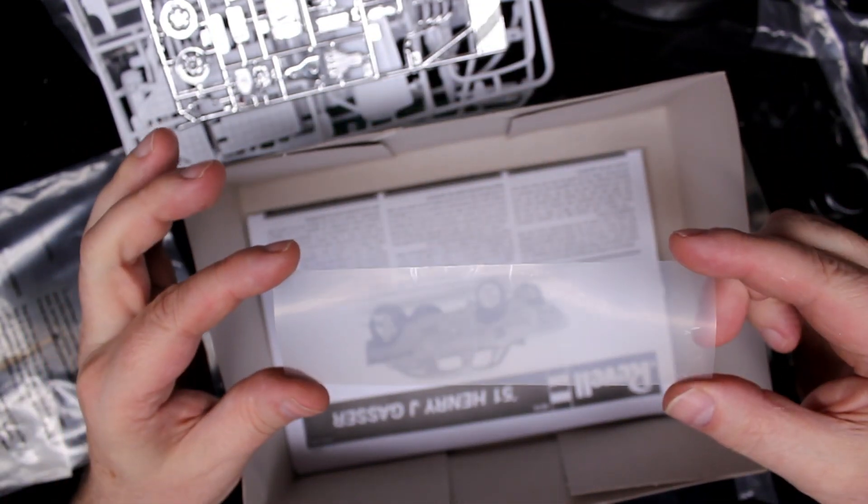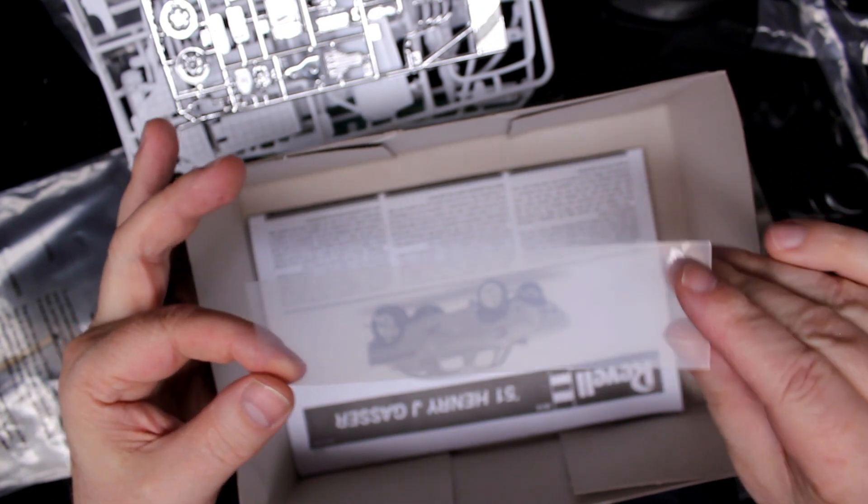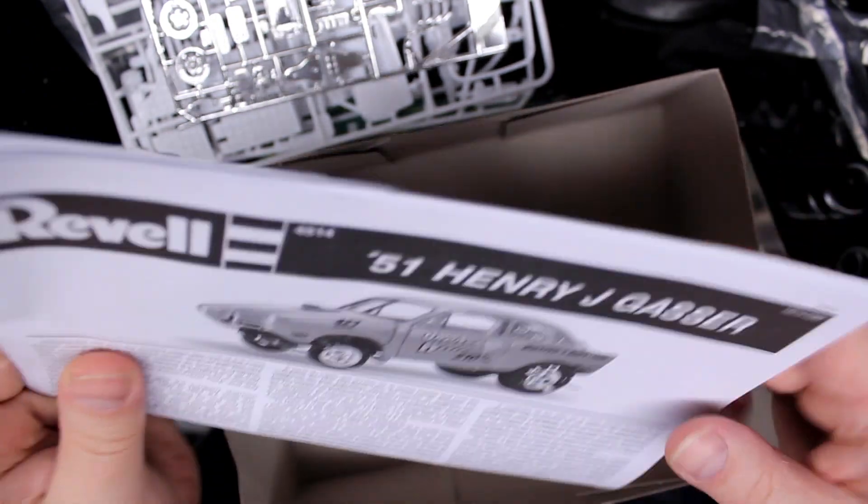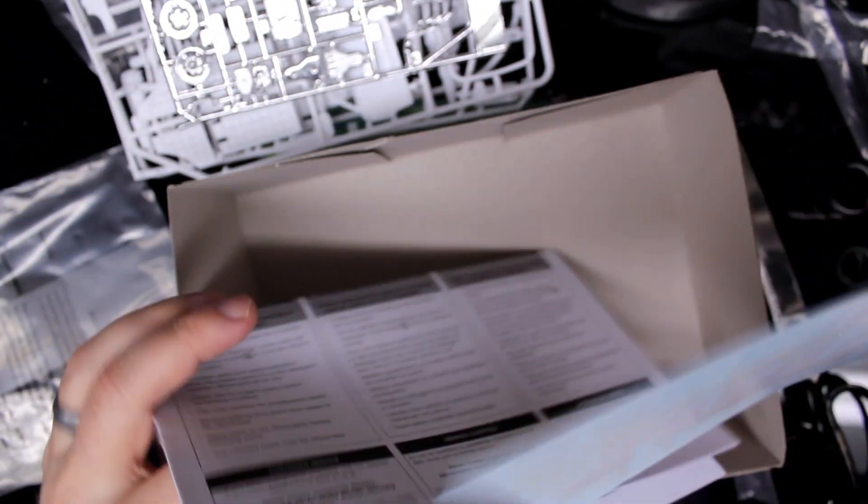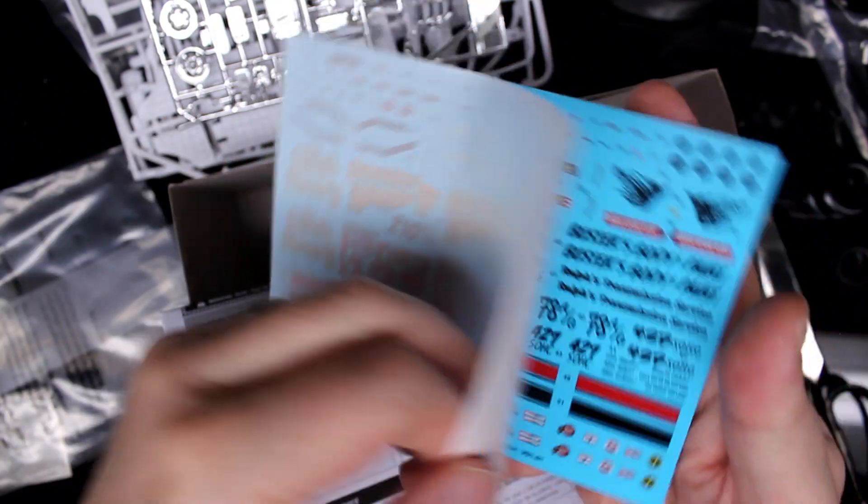There's the windshield. They give you a flat sheet of plastic for that. Okay. And the decals, there's the decals. Somewhat exposed.